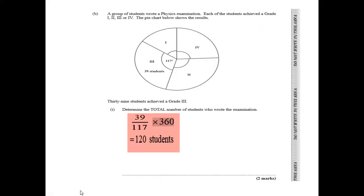Part B of question 5 says a group of students wrote a physics examination. Each student achieved a grade one, two, three, or four, shown in the pie chart below. Given that 39 students achieved grade three, and that sector represents 117 degrees out of 360 degrees, we calculate the total number of students: 39 divided by 117, multiplied by 360, gives us 120 students total.